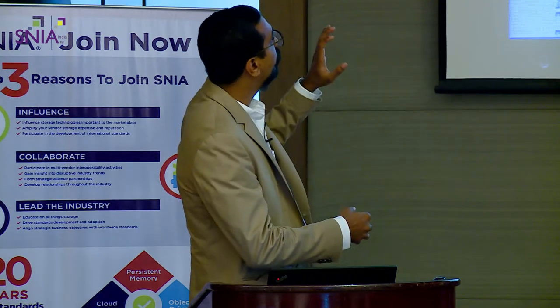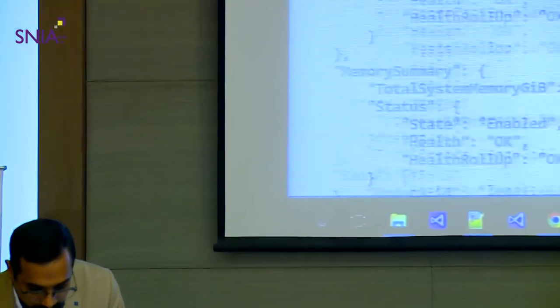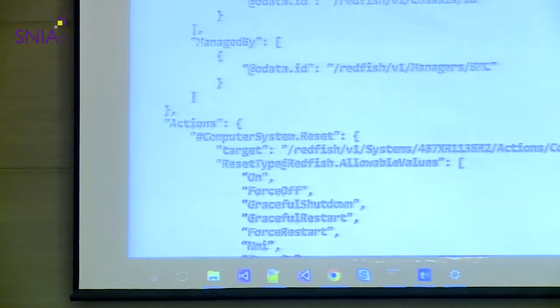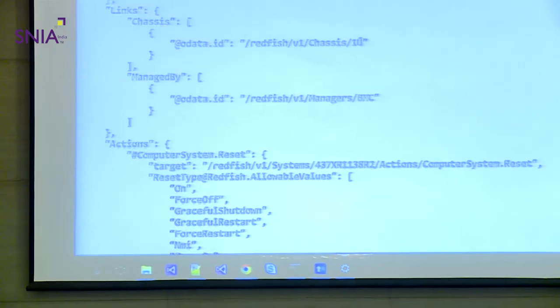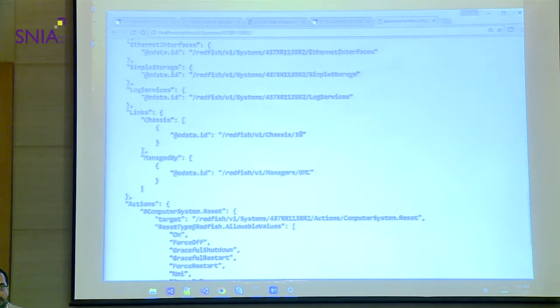This is the computer system representation of a simple computer system — you would see a similar model. The best part is it is so human readable. Even if you are looking at this for the first time, it's practically easy for you to see what the various fields are and what they indicate. In the links section, you will see there is an element called chassis and you will see the URI which I accessed earlier. This establishes a two-way association between chassis 'one new' and the current system.